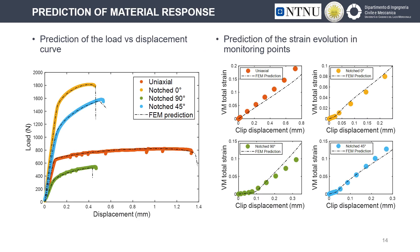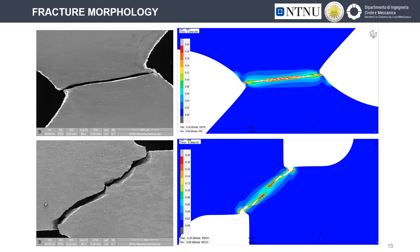Comparing the experimental results and the numerical predictions, we can see that the model is able to reproduce with a high level of accuracy both the macroscopic load versus displacement response and the evolution of total strain in the monitoring area. Moreover, the damage model can predict with high accuracy the failure point for the different tested geometries. The model is also able to provide a close representation of the fracture morphologies, as shown by the comparison between experimental and numerically predicted fracture surfaces for the 90-degree and 45-degree notched samples.